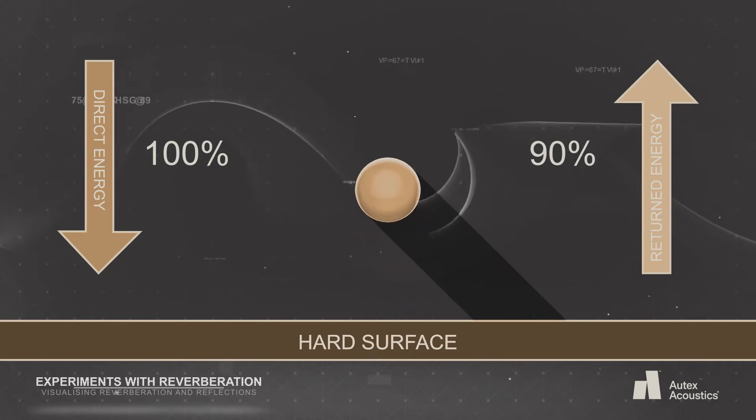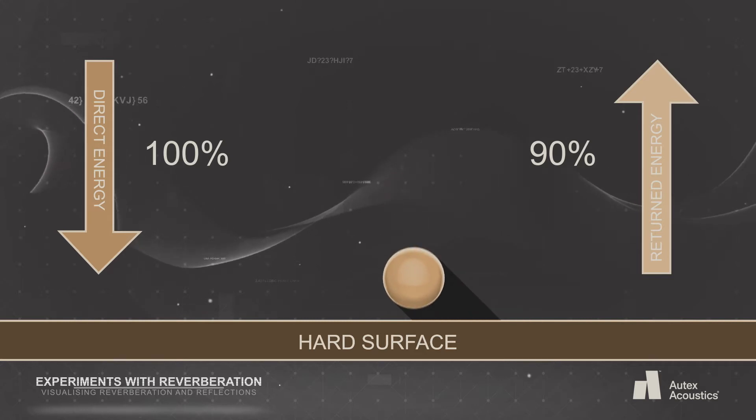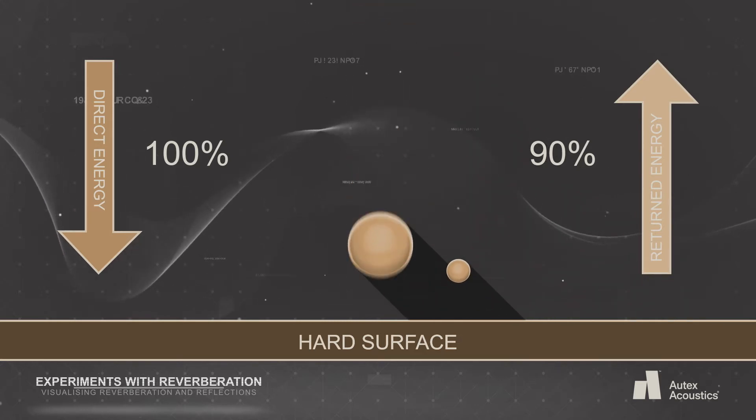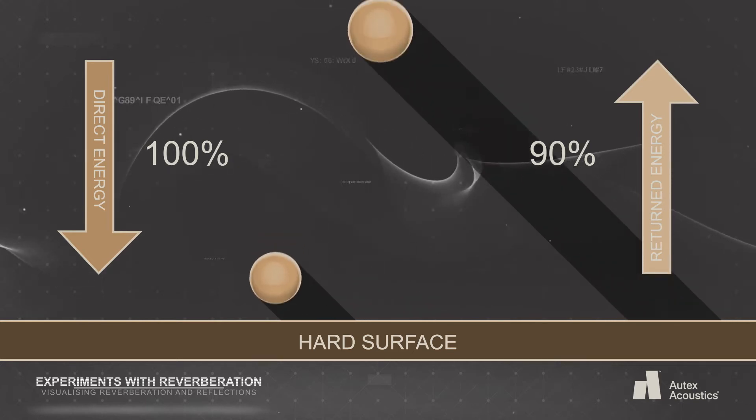If it's constantly hitting a hard surface. Similarly, sound waves bouncing between hard surfaces will keep reflecting around a room for a long time until their energy is diffused and absorbed.